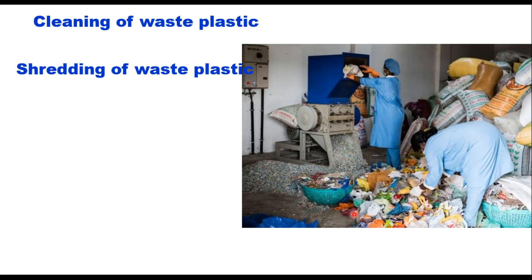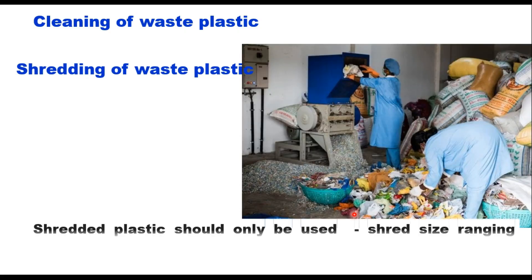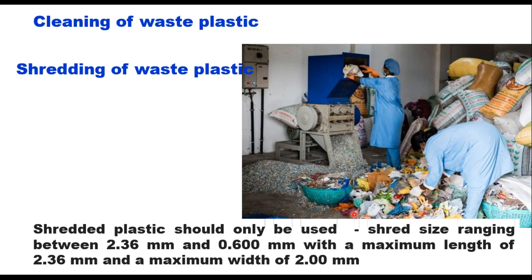After segregation, the plastic is cleaned and then shredded. The shredded plastic should have a size between 2.36 mm and 0.6 mm, with a maximum length of 2.36 mm and a maximum width of 2 mm. That is the processing of waste plastic before it is used in road construction.